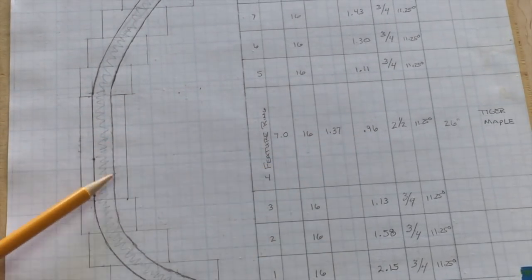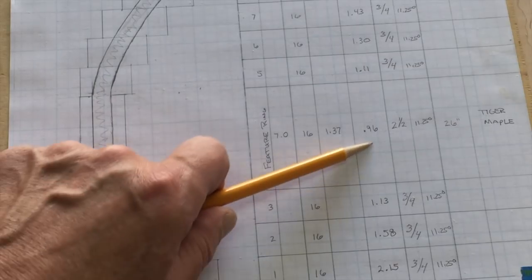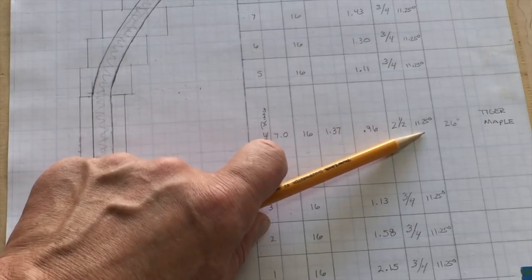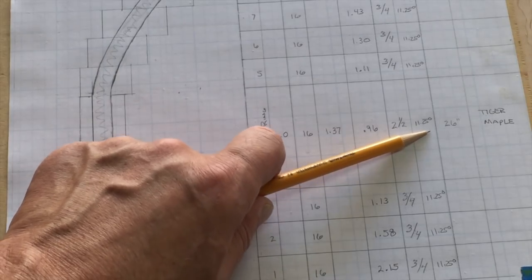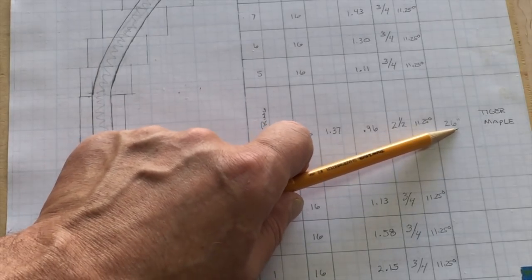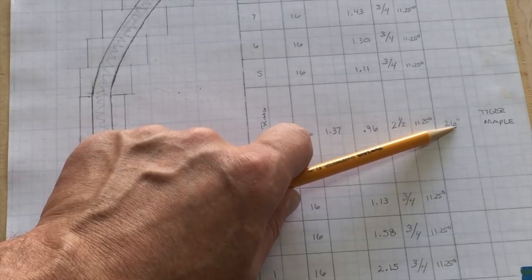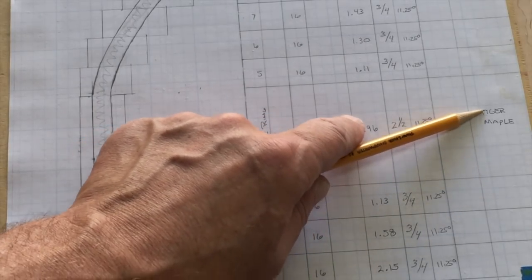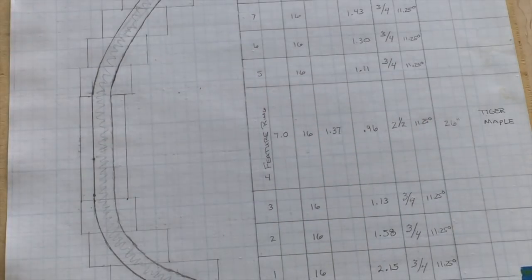The thickness needs to be 0.96 inches, two and a half inches tall. The angle is 11 and a quarter degrees. The board is 26 inches long that I need, and I'm going to use tiger or curly maple for the piece.